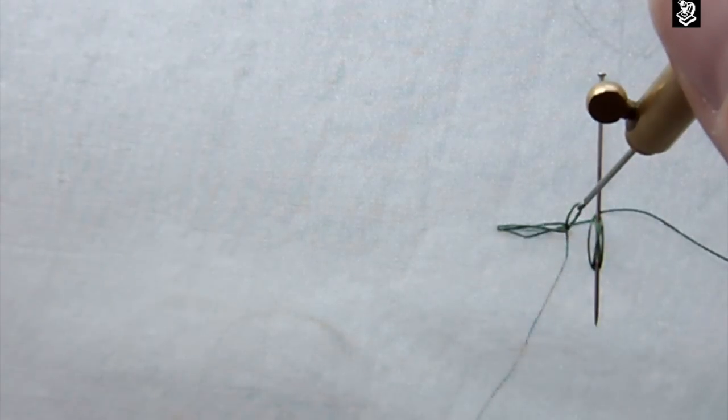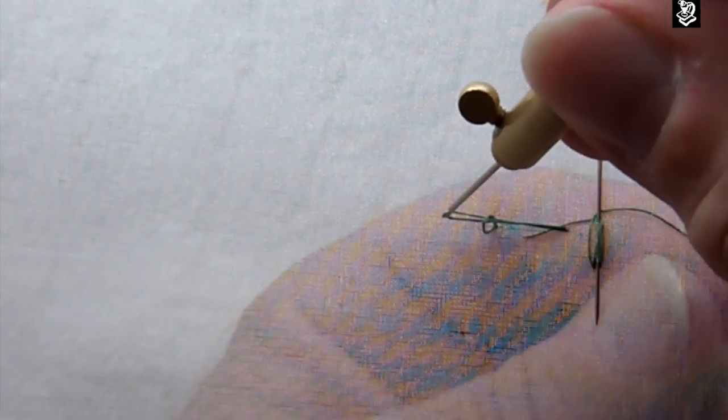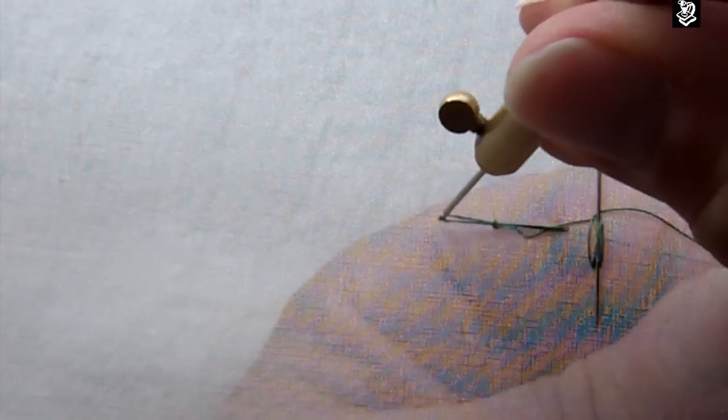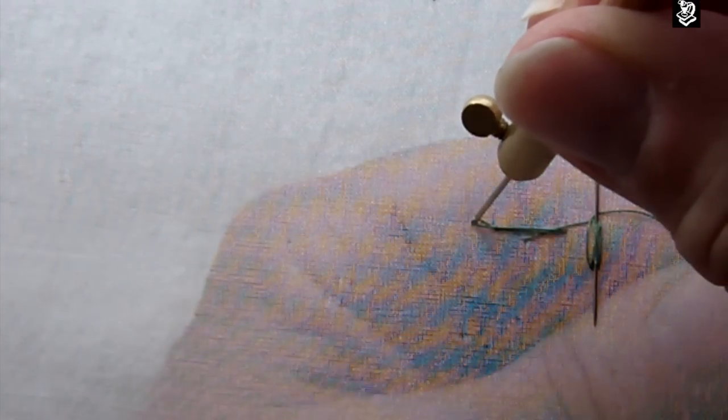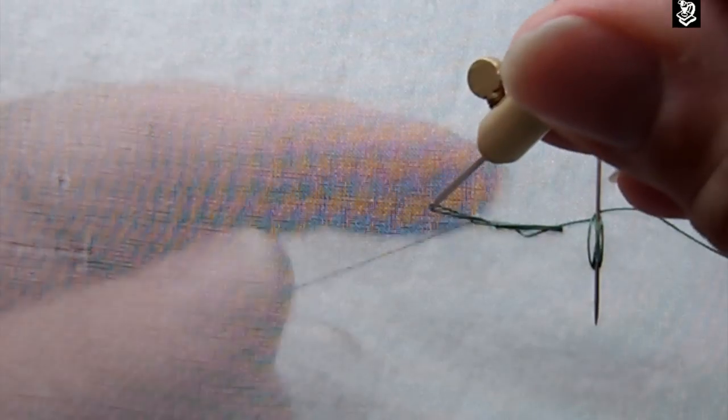But watch what happens to that loop of thread from the previous stitch. As I move forward, it goes forward with me, and I have to straighten the thread out to pull that stitch down, and then I can make my third stitch. And it's wrap, turn, snap, release, lift, turn. Now I'm ready to continue.